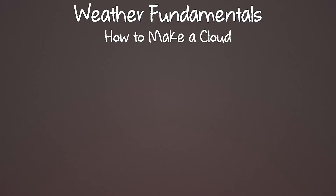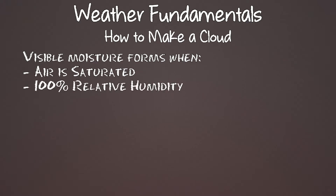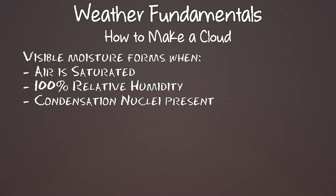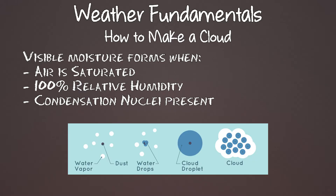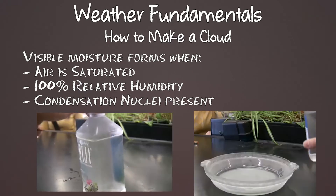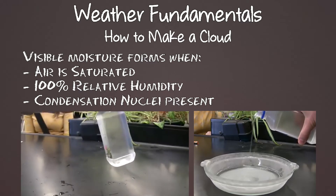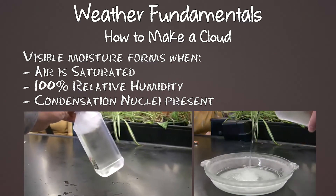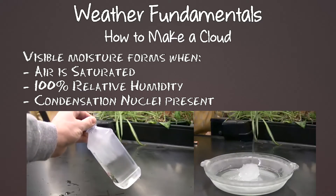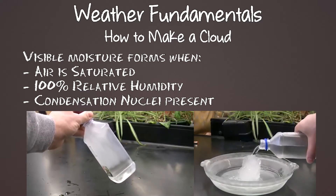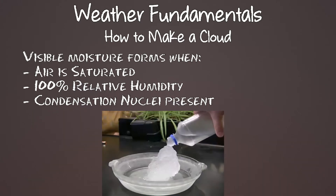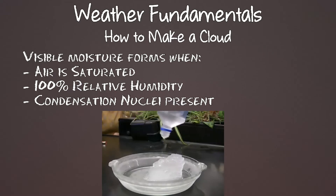For any visible moisture to form — like clouds — air has to reach its saturation point, or 100% relative humidity. You also need some sort of particles for water to condense onto to make a water droplet. Those little particles are called condensation nuclei, and they can be smoke, tiny dust particles, or salt. If there aren't any particles, water can actually cool below freezing and not freeze because it has nothing to condense onto. If you fly through this supercooled water, your airplane becomes a condensation nuclei and freezes up immediately.